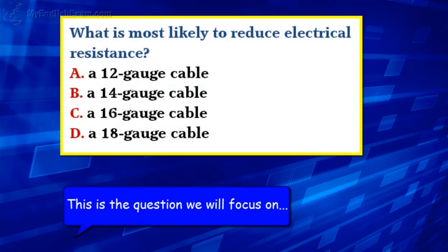This is the question we will focus on. What is most likely to reduce electrical resistance? A. A 12-gauge cable. B. A 14-gauge cable. C. A 16-gauge cable. D. An 18-gauge cable.